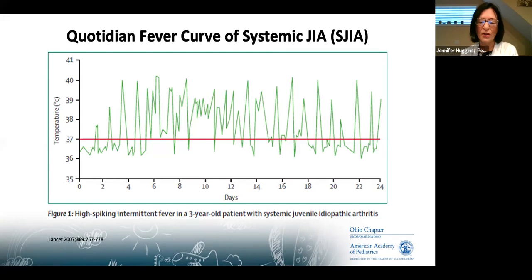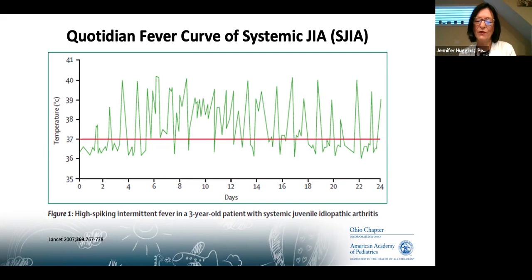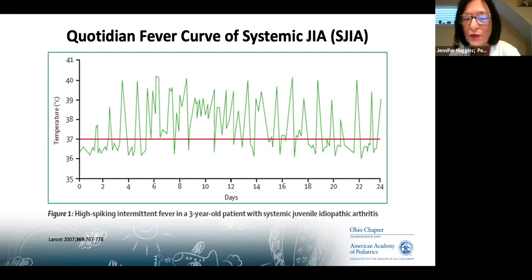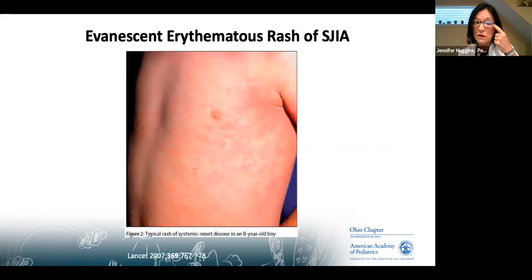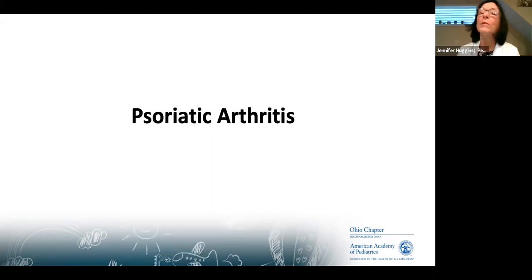The quotidian fever curve is characteristic of systemic JIA: the fever spikes once or twice a day, and when it returns to baseline it goes below normal. As a primary care physician you won't have this fever curve when first seeing these kids, but in the hospital the fever synopsis gives rheumatology an early idea. The evanescent rash comes and goes, often with the fever, and can look like many other rashes seen in primary care — it has to fit the whole clinical picture.